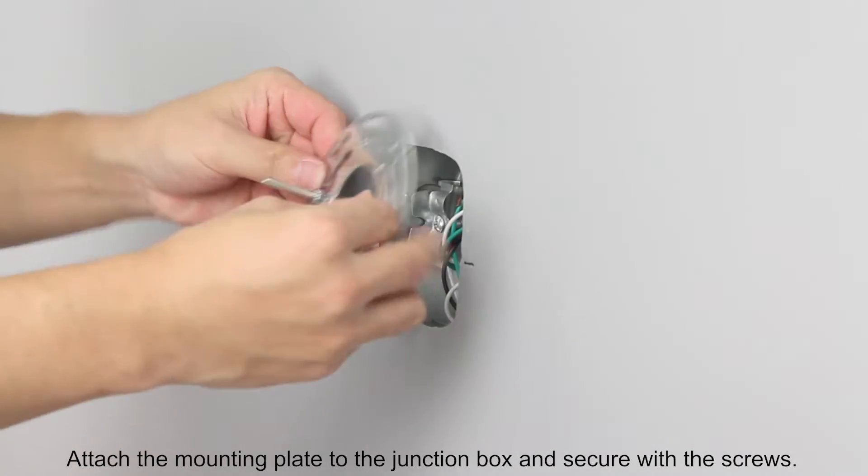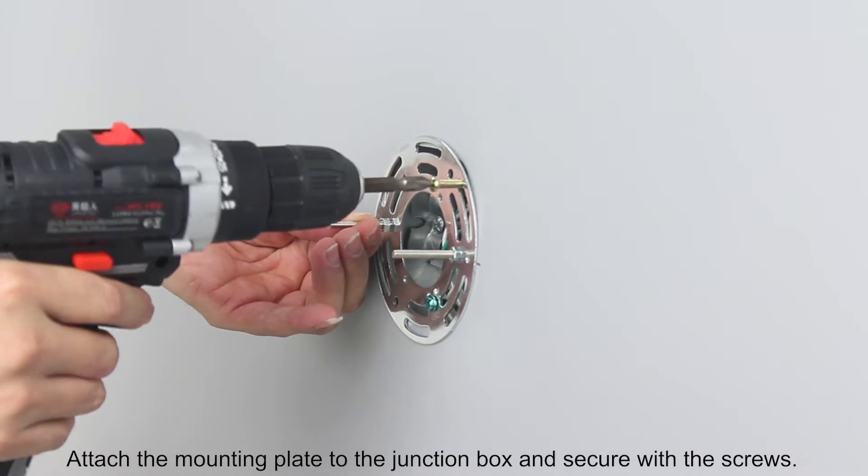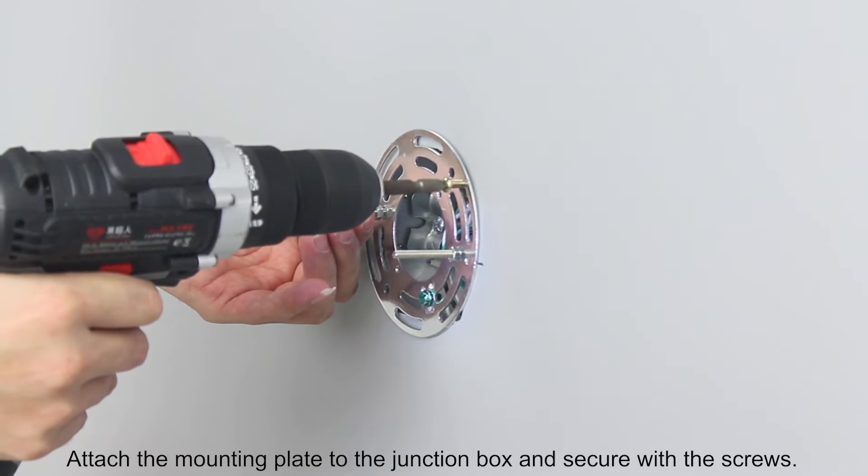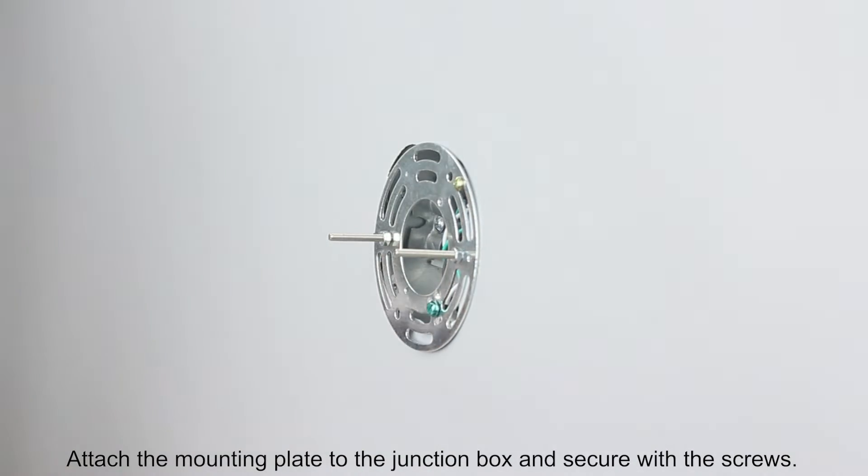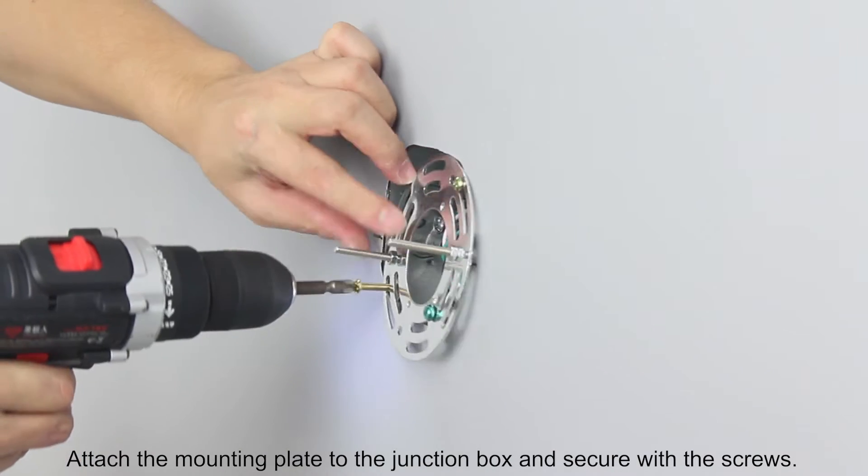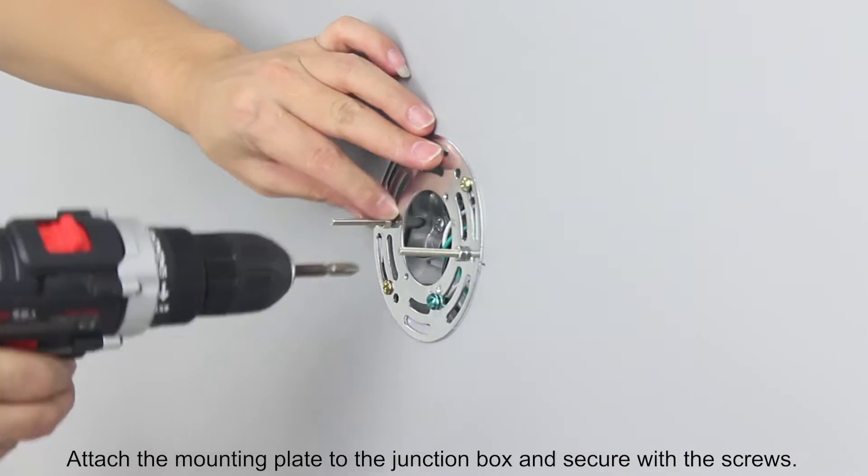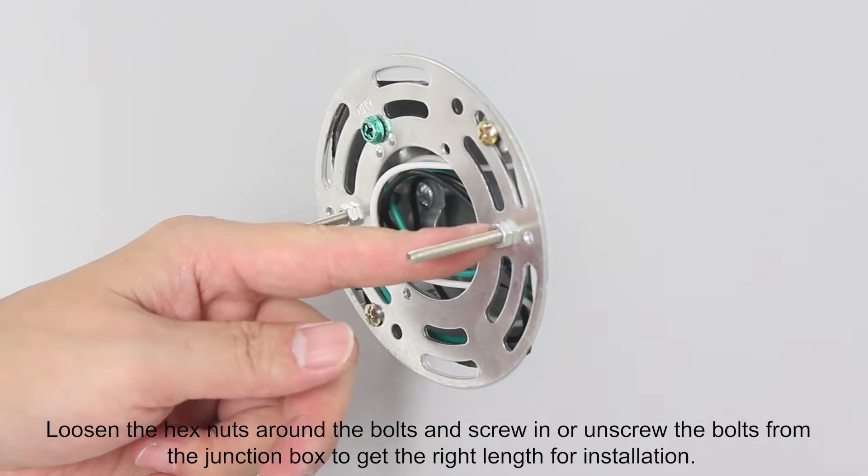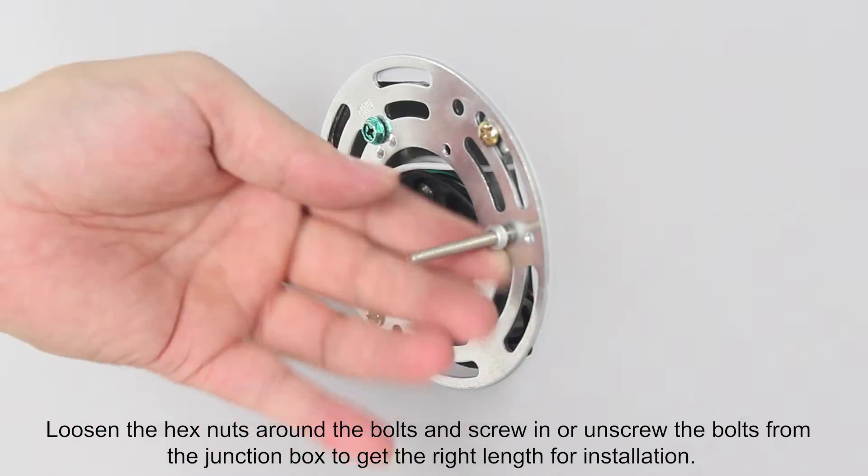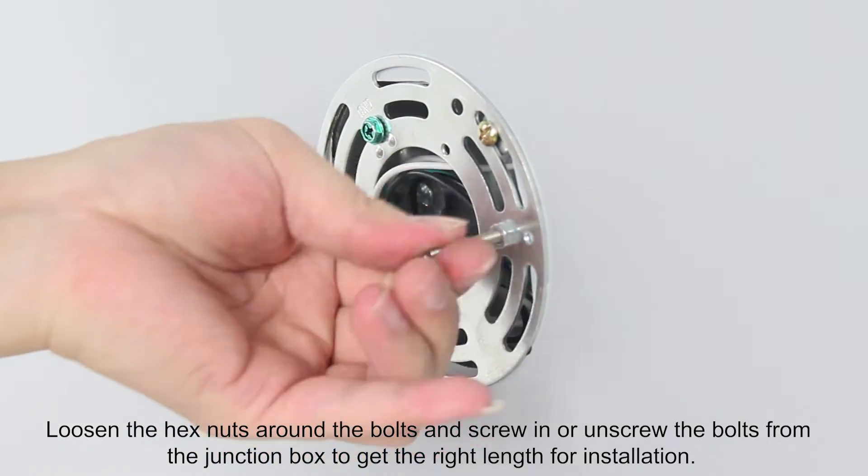Attach the mounting plate to the junction box and secure with the screws. Loosen the hex nuts around the bolts and screw in or unscrew the bolts from the junction box to get the right length for installation.